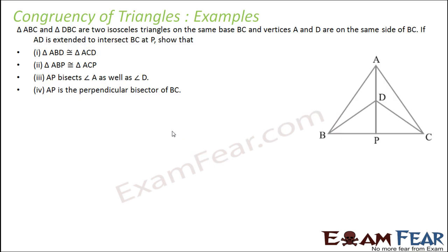This is a little lengthy question. Triangles ABC and DBC are two isosceles triangles on the same base BC. This is one isosceles triangle and this is another isosceles triangle.